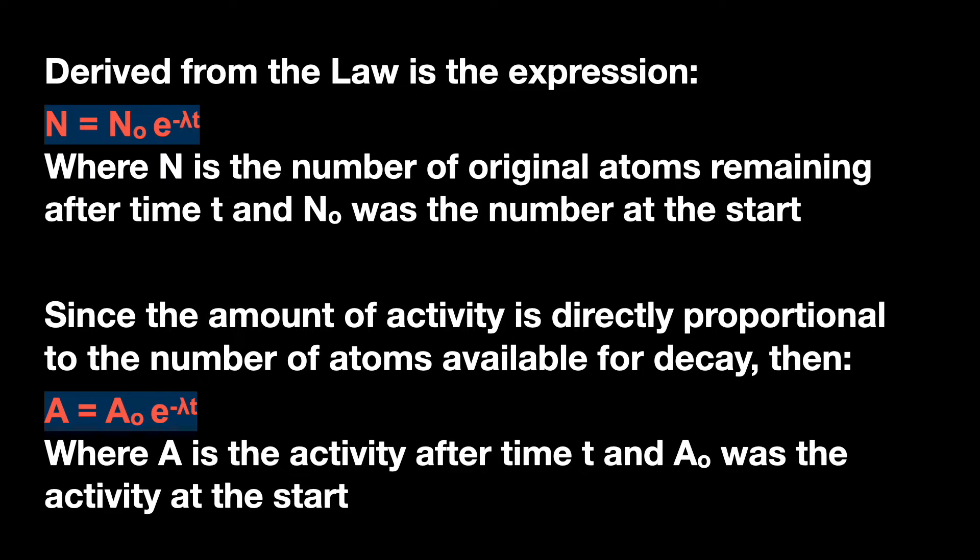Because the amount of radioactivity is directly proportional to the number of radioactive atoms available, we can simply replace the numbers with A, the activity or rate of decay. And rate of decay is much easier to measure directly.